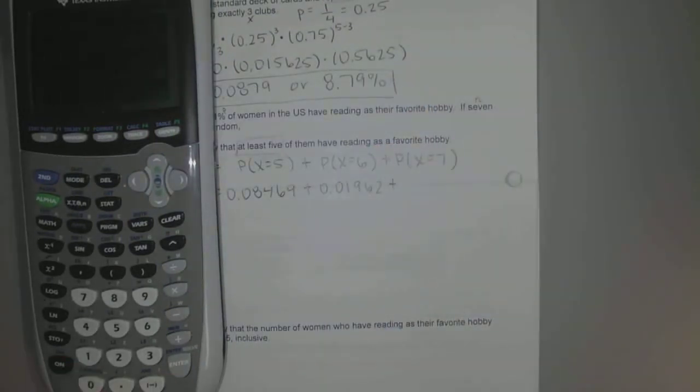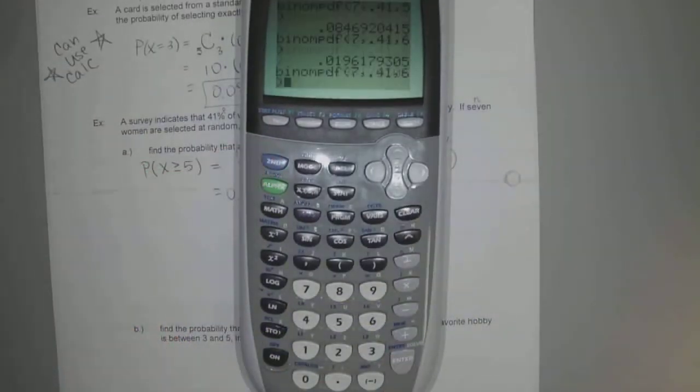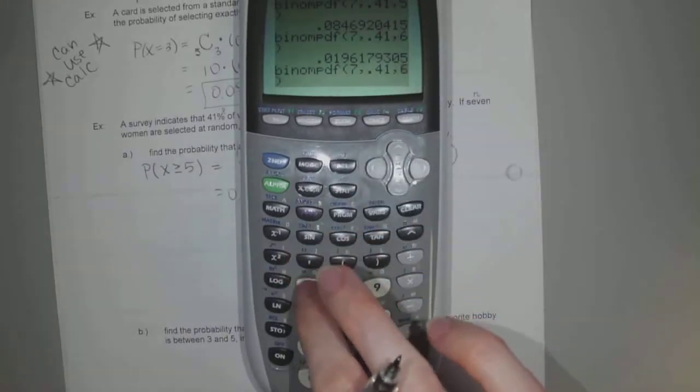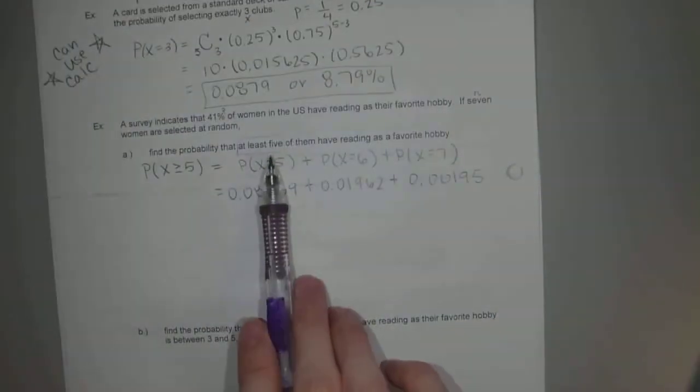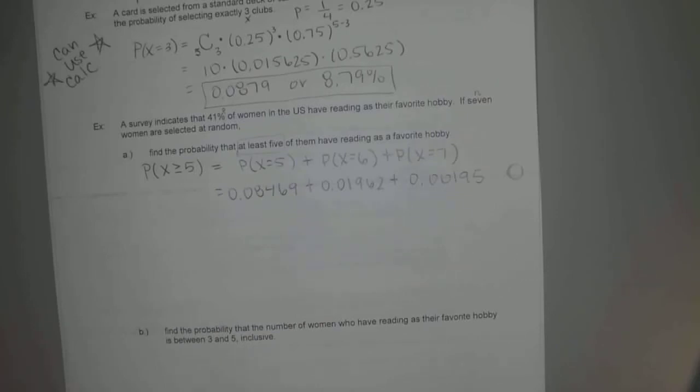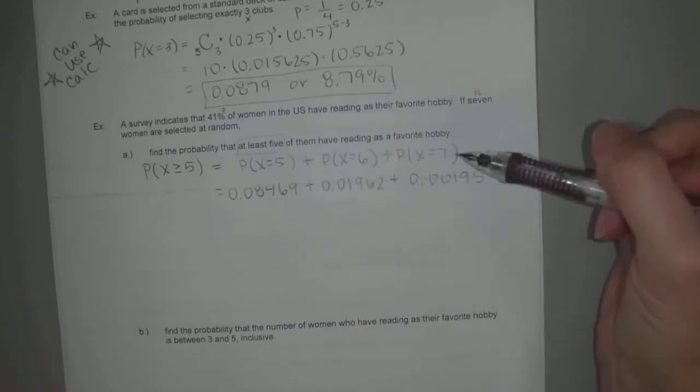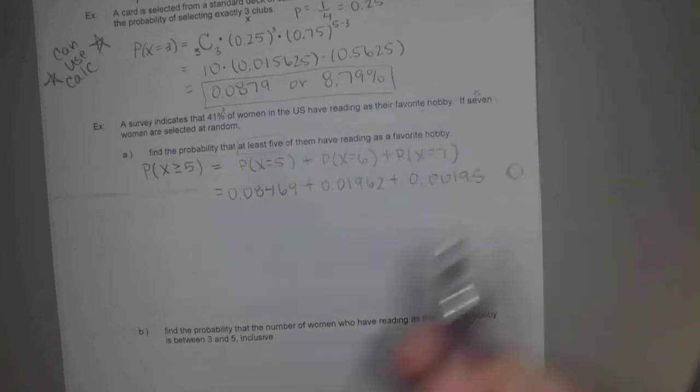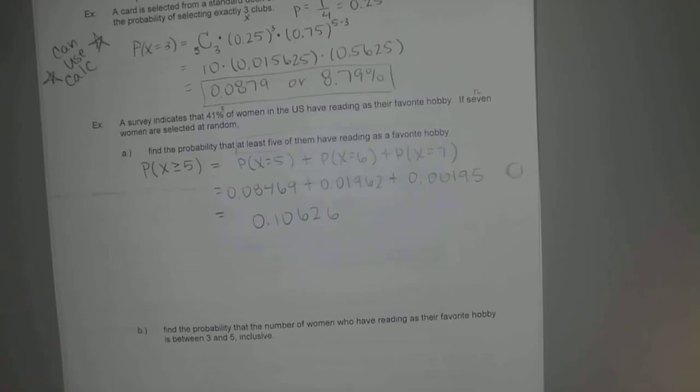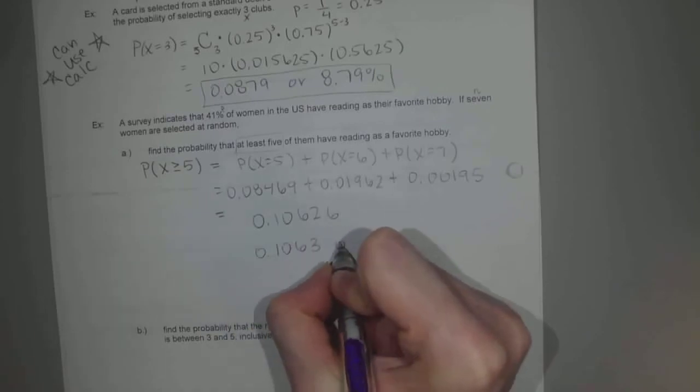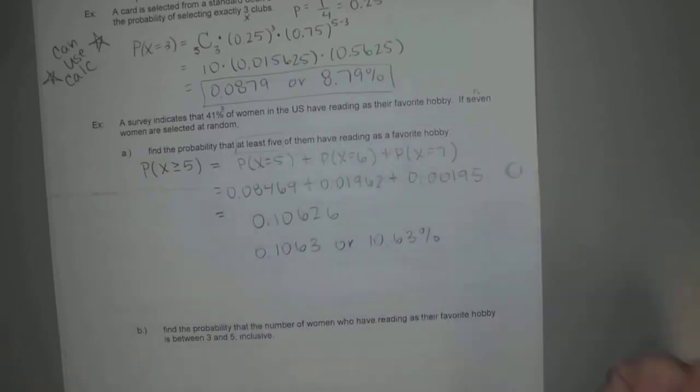And then last, one more time, guys. Hit second entry again, or second enter. Second enter, and the same screen will pop up. And what do we have to change our six to now? A seven. And that gets smaller and smaller and smaller. So we have 0.00195. Add those three numbers up. 0.08469 plus 0.01962 plus 0.00195. Do you get 0.10626? Does that look okay? And by adding that fifth decimal, we will get the rounding correct. If they tell us to round to four decimals, we'll say that this is 0.1063 or 10.63%.